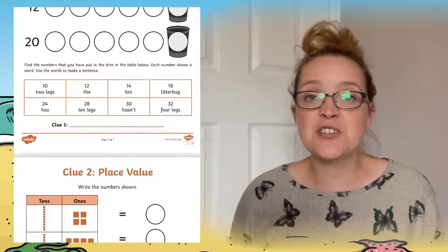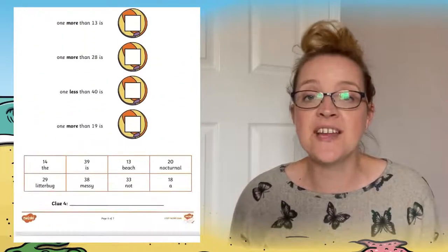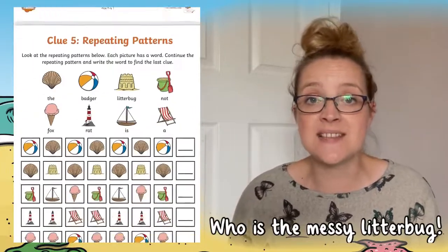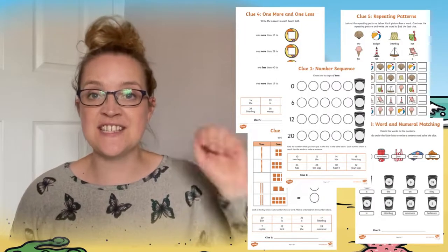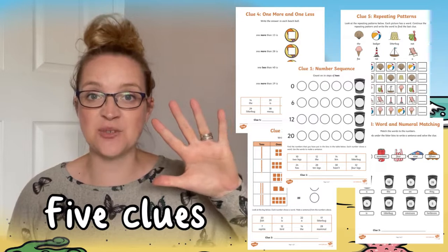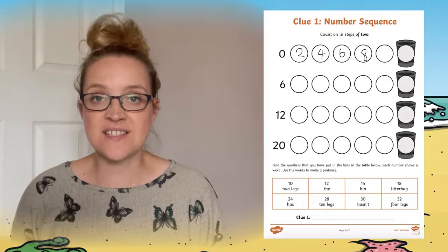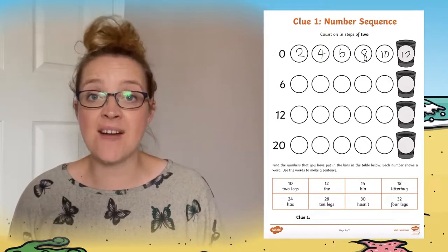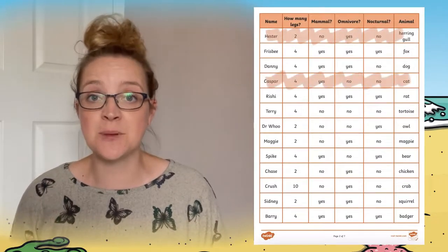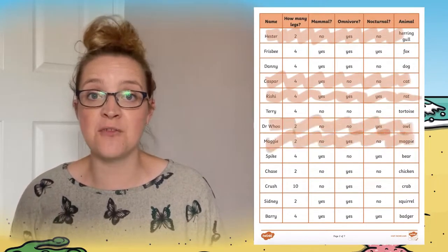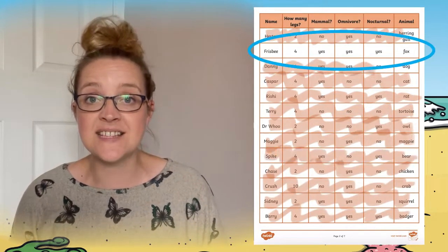This is done by children looking at the clues, answering the maths questions and working out who is the messy litter bug. To complete this activity your children need to answer the five clues. These are all different place value questions. Once they have worked out the answer they then need to go and have a look at the table and cross off the people it doesn't apply to. Once you have crossed everybody off the list you will be left with one person and this is the messy litter bug.